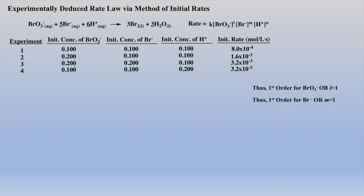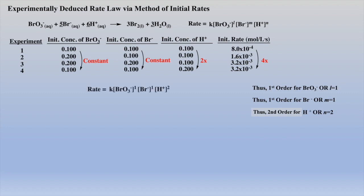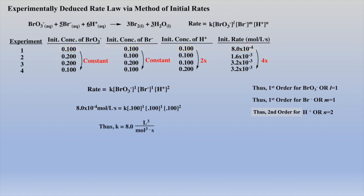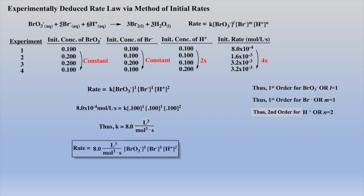Lastly, when the concentrations of the other reactants are both held constant and the concentration of protons is doubled, we see that the rate quadruples, which indicates second order with respect to protons. The rate law can now be written, and using the data from experiment one, the rate constant can be deduced. The units for the rate constant can get a bit cumbersome, as this example demonstrates. Rewriting the rate law with the rate constant now completes this exercise.